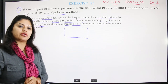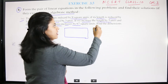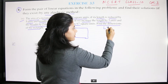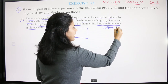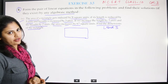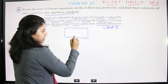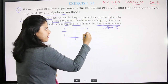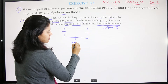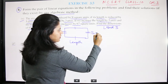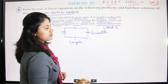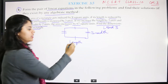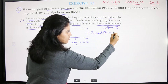We need to find the dimensions — meaning length and breadth — of the rectangle. Suppose we have a rectangular garden. We will assume length as x and breadth as y, because we have linear equations and we need to work accordingly.